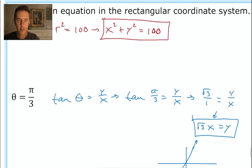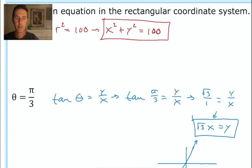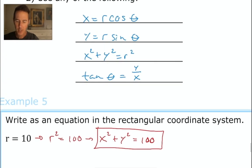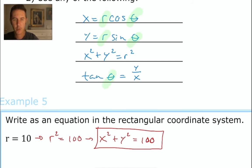For theta equals pi over 3, this is a little different because we're not replacing theta with something. Instead, we plug theta equals pi over 3 into one of our four equations. Using the first or second equation would still leave an r value, which we don't want in a rectangular equation. The third equation has no theta to plug into. But if we plug theta into the fourth equation — tan theta equals y over x — taking tan of pi over 3 equals y over x will give us an equation with only x's and y's, completing the conversion.